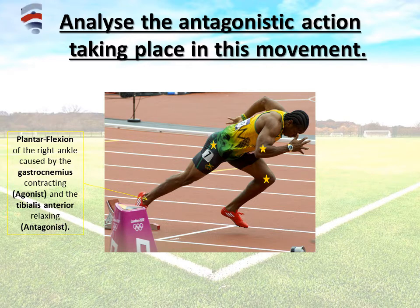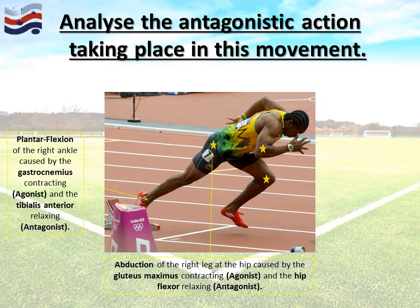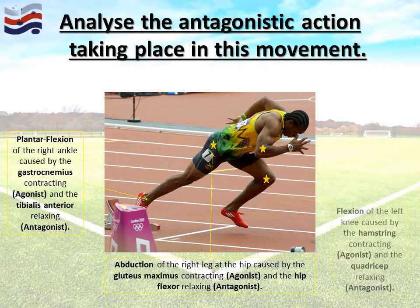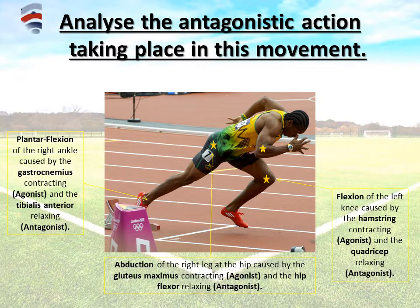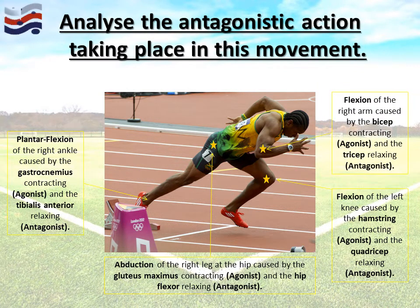Let's see how well you did. Abduction of the right leg at the hip is caused by the gluteus maximus contracting — making it the agonist — and the hip flexor relaxing, making it the antagonist. On the left knee, the leg is bent — flexion — caused by the hamstring contracting and the quadricep relaxing. And lastly, the right arm is bent, also flexion, caused by the bicep contracting and the tricep relaxing.